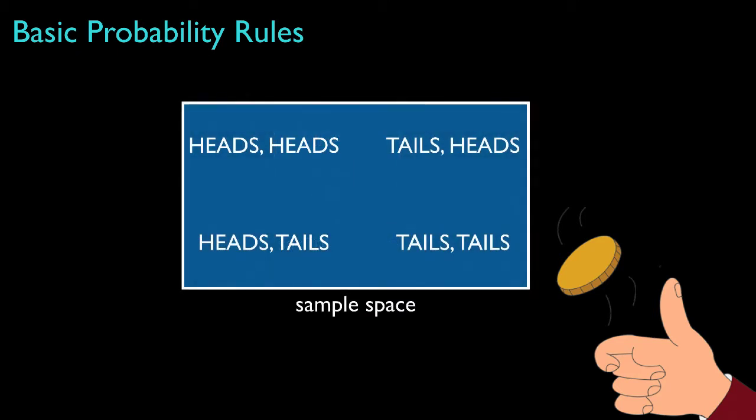If, though, we flip the coin twice, then the sample space would contain four possible outcomes: heads on the first toss and heads on the second, heads on the first and tails on the second, tails on the first and heads on the second, and tails on the first and tails on the second. One and exactly one of these outcomes must occur. The events could be things like heads only once, heads twice, tails on the first toss, heads on the second toss, and many others. This simple example shows how quickly the set of events can become much more rich, even for a fairly simple example.